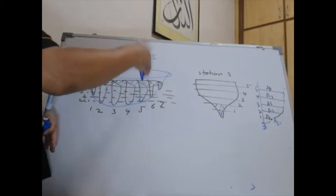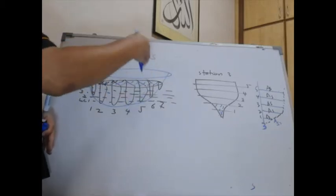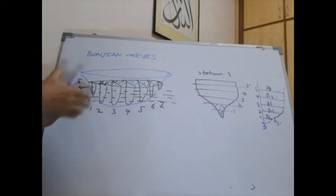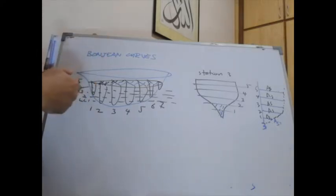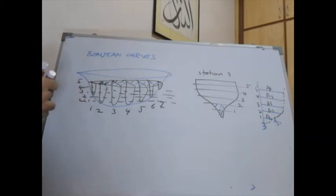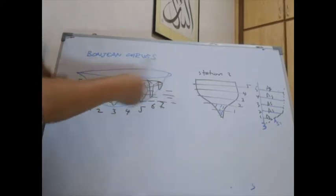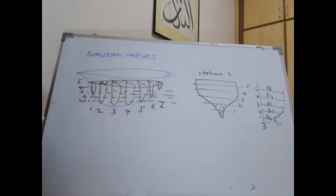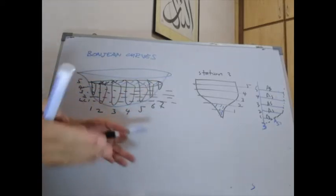Bonjean curves are drawn from the sectional area at the stations. As we know, normally when a ship is drawn, it is cut into a number of stations from LBP to AP. Sometimes it's 20, sometimes it is 10 stations. In this case, I'm using 7 stations, just as an illustration.